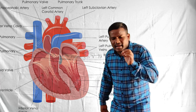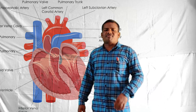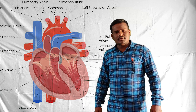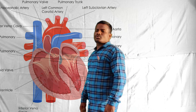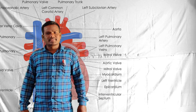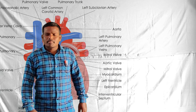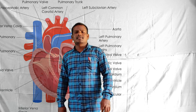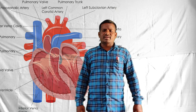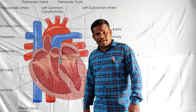In the circulatory system we find three parts. Which are they? The first one is blood, the second one is blood vessels, and the third one is the heart.